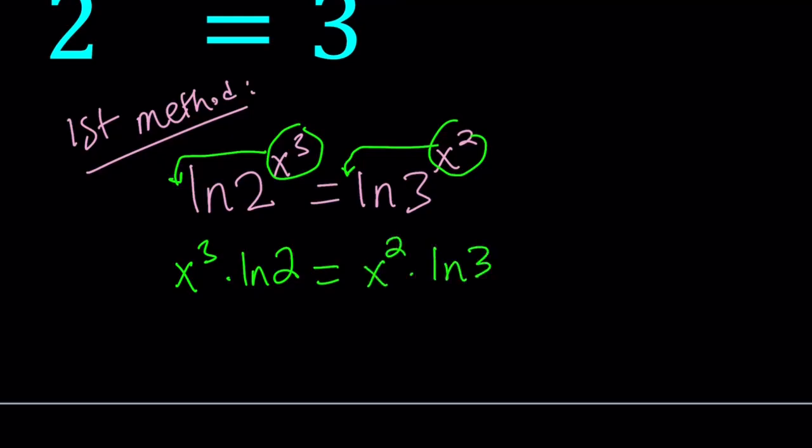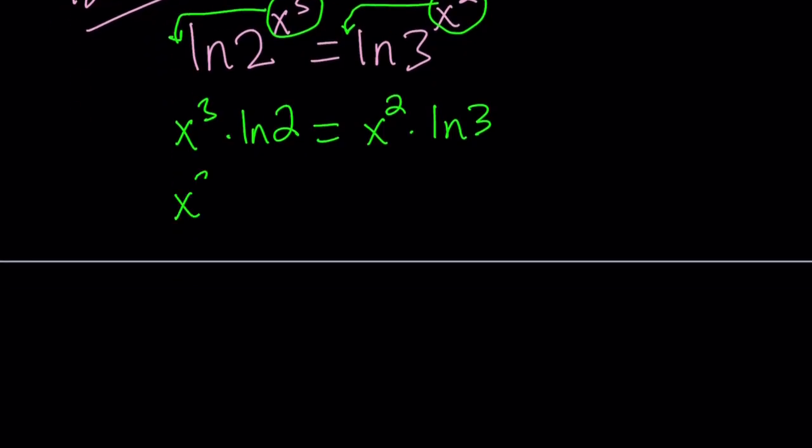By the way, ln is the natural logarithm, which is base e. Great. Now, let's put everything on the same side and see what we can do with this. x cubed times ln 2 minus x squared times ln 3 is equal to 0.